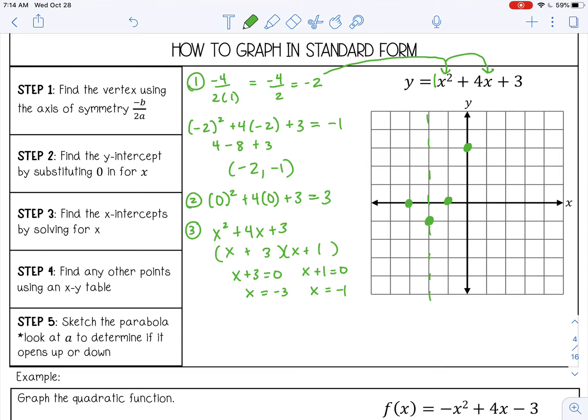And then if you need more points to finish out your parabola, you can use an xy table. Let's plug in negative 4 and just see what we get. It should be symmetrical, so it should be about right here. Negative 4 squared plus 4 times negative 4 plus 3. So 16 minus 16, that's 0 plus 3 is 3. And that should be enough to determine your parabola. So step 5 is to sketch the parabola. And this opens up because it's positive 1. There is my parabola.